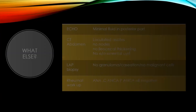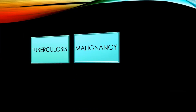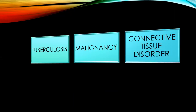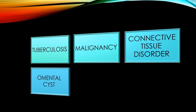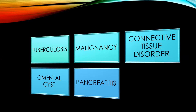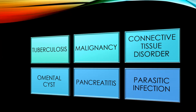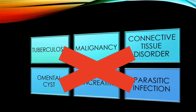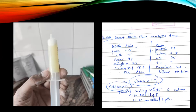At this point, TB became unlikely because CBNAAT turned negative in all samples. Malignancy was almost ruled out as there were no malignant cells. Connective tissue disorder — ANA, C-ANCA, P-ANCA all turned negative. Omental cyst — CT could not find one. Pancreatitis became unlikely because amylase and lipase were normal and CT did not reveal pancreatitis. Parasitic infection became unlikely because eosinophils were not elevated. With this scenario the child was shifted to pulmonology.